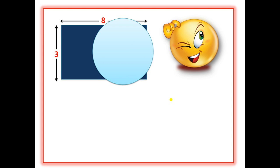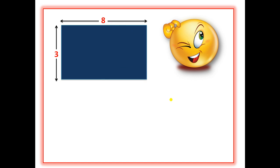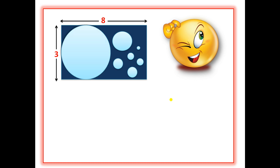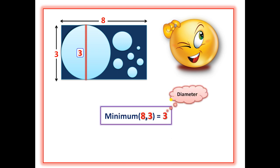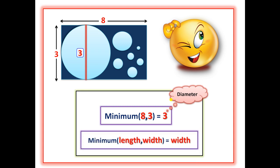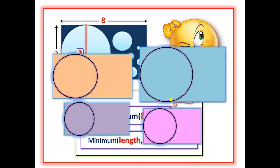The circle must be completely contained with the maximum possible area. There can be multiple inscribed circles, but none of them are of the maximum diameter. The maximum inscribed circle has a diameter equal to the shortest side of the rectangle — in this case, that is 3. So in general, the minimum of the length and width, that is the shortest side, will always be the diameter.